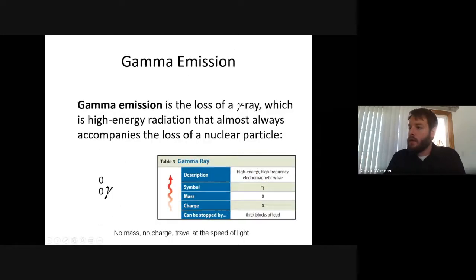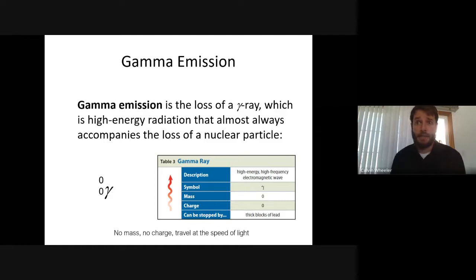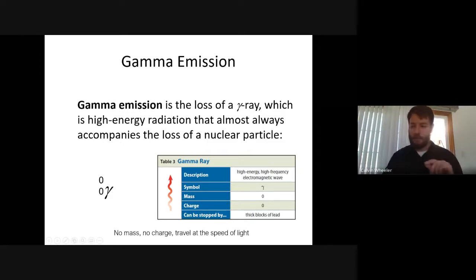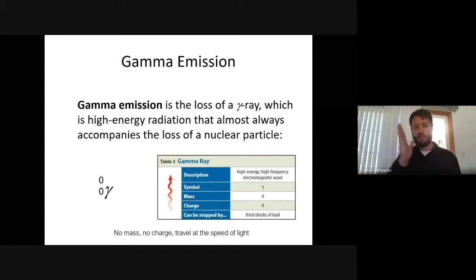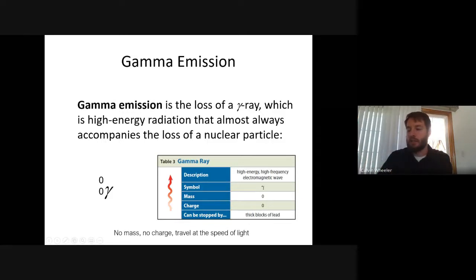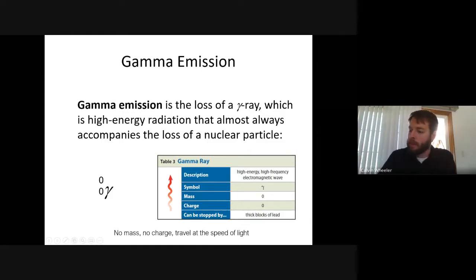The next type is gamma emission. Gamma is not a particle — it is just a high-powered energy wave. It's symbolized by the lowercase Greek letter gamma, which looks like a sideways two that's extremely wide. Mass number zero, charge zero — two zeros with the gamma symbol. When writing gamma, make sure you're not writing the lowercase Greek letter nu, which looks similar.